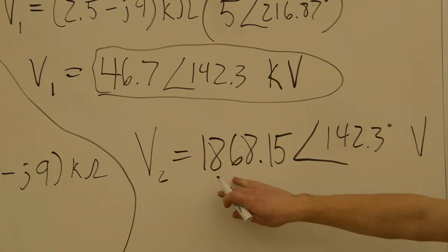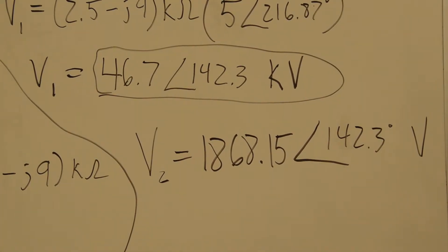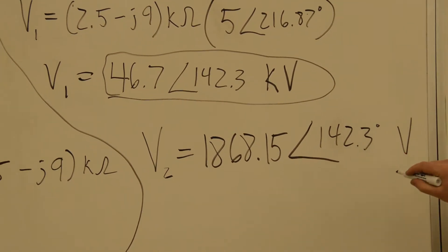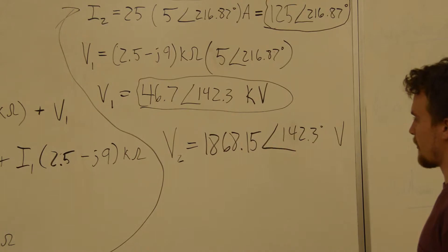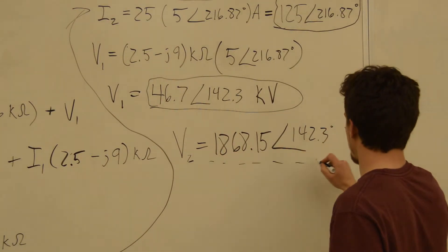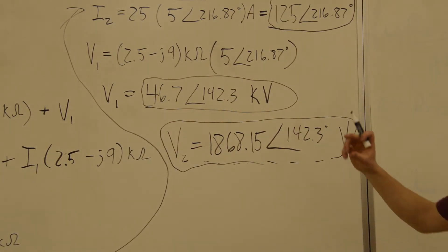So, we have V2 is equal to about 1,868 volts. So, we can see that we went from about 50 kilovolts down to about 1,800 volts. 1,800 volts is still kind of a lot. But, we still got a pretty significant decrease in voltage across there.